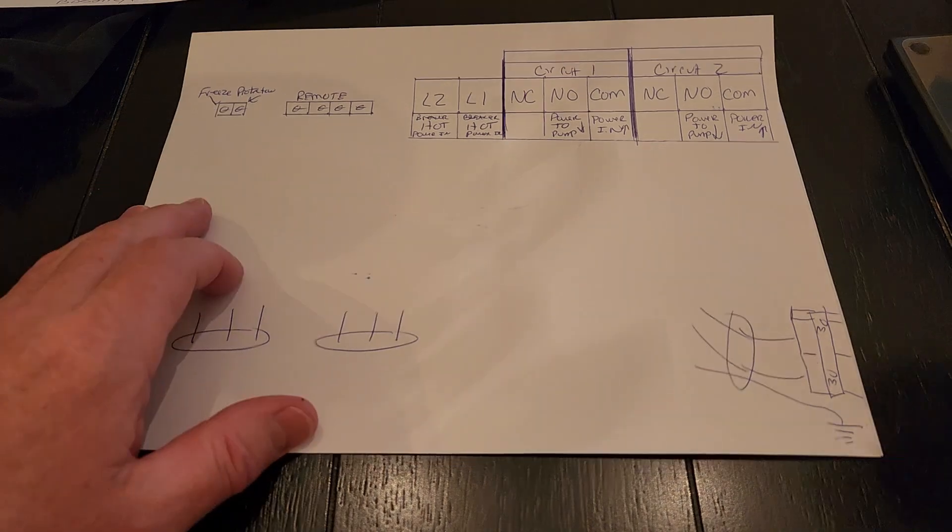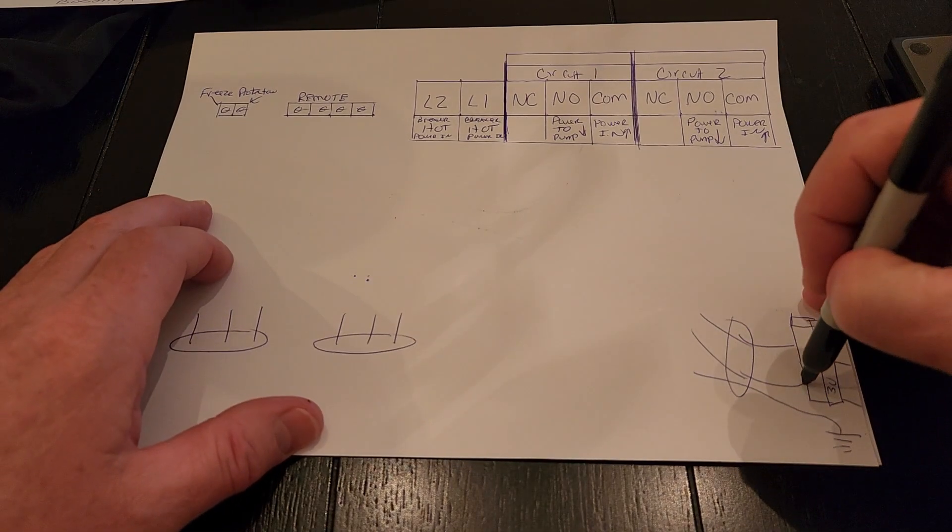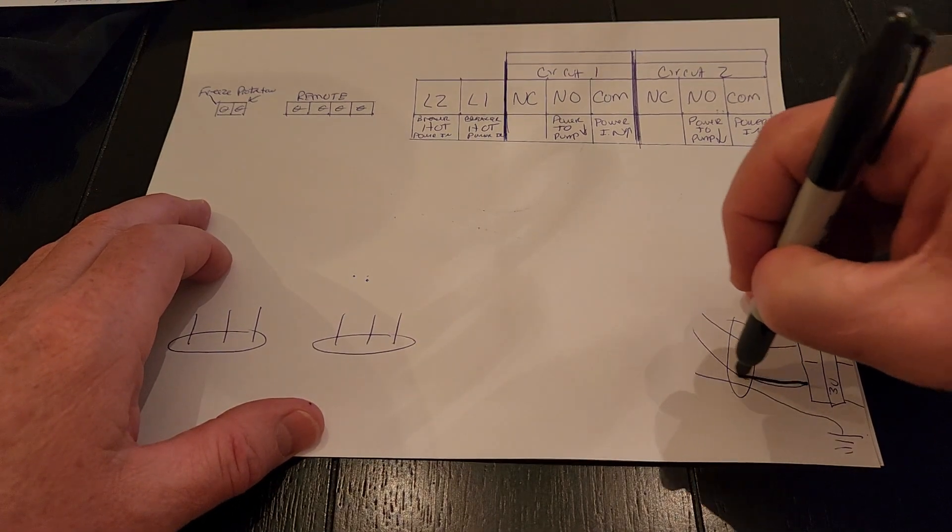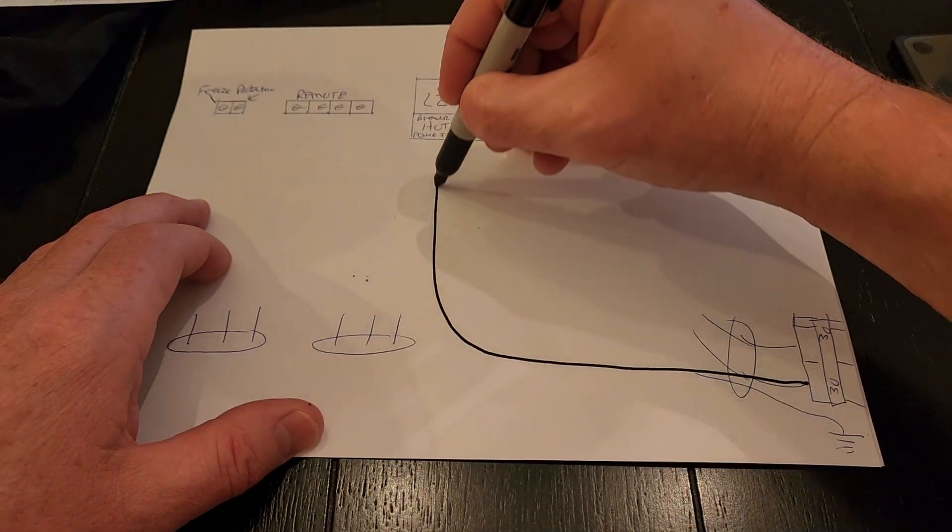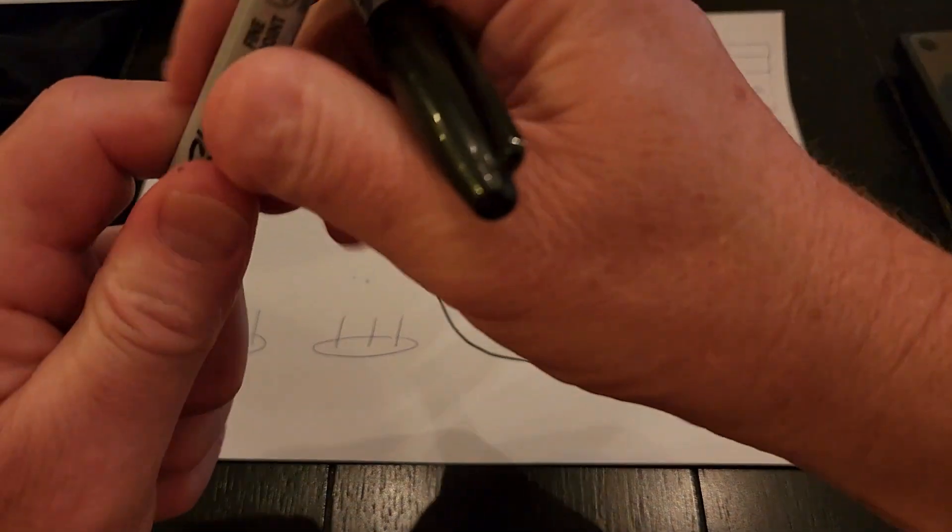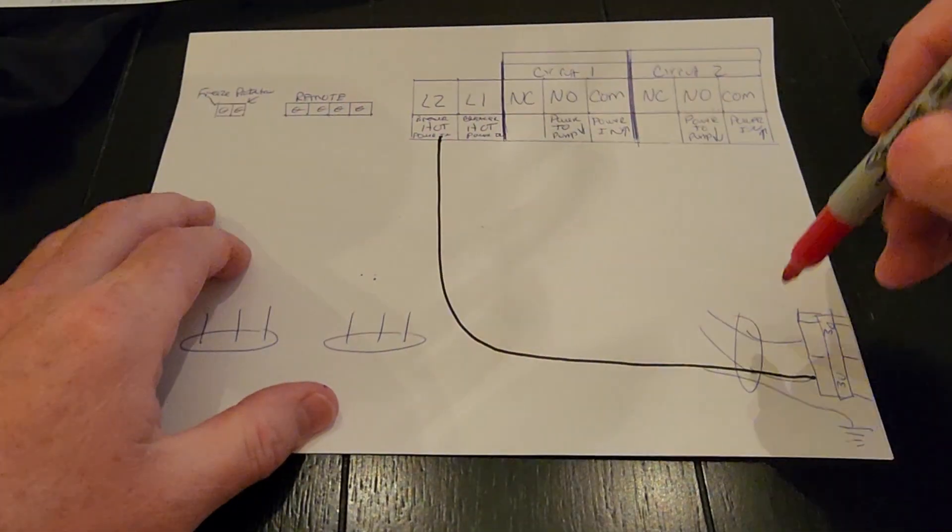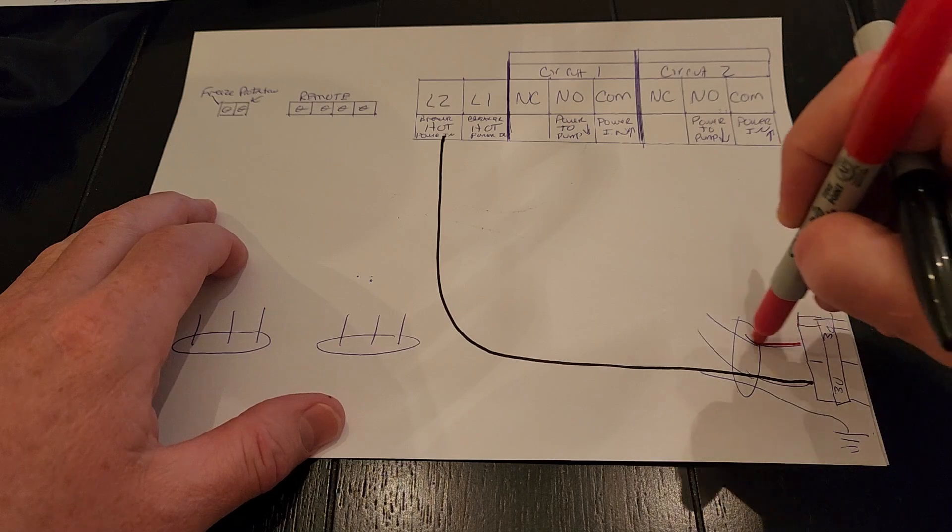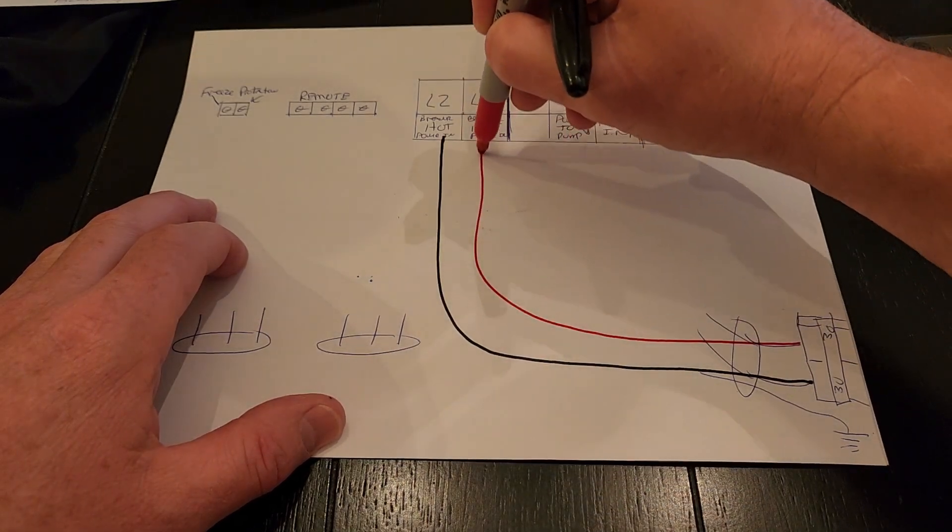So to start with, he had me take my black power wire out of my breaker and run to the L2 side. And then I had my red wire out of the other side of the breaker, running to the L1.